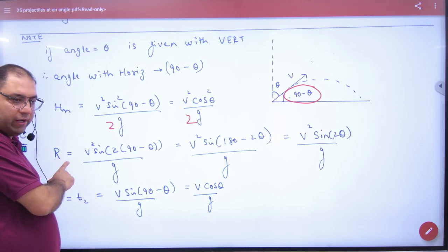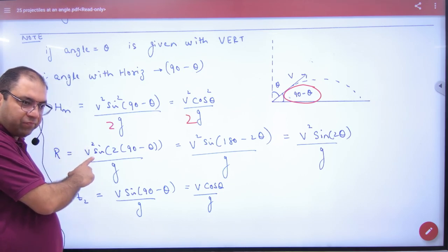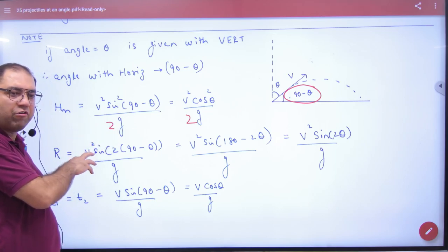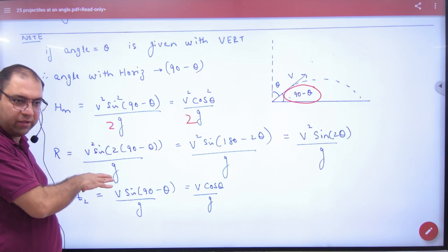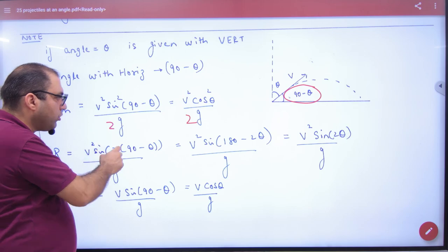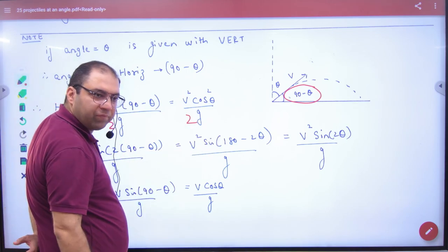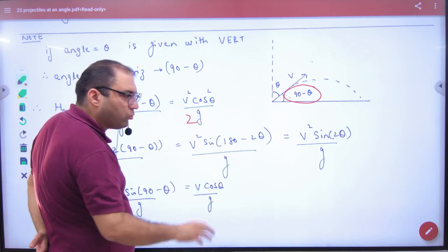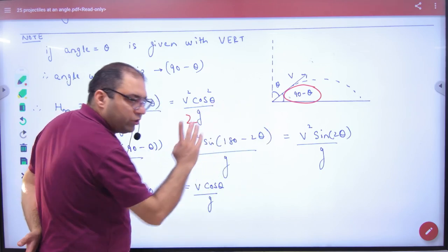Range formula: V square sine 2 into 90 minus theta by G. Why? Because range is the same formula, V square sine 2 theta by G. But theta, what will come here? 90 minus theta. 2 into 90 is 180, 2 theta. Sine of 180 minus 2 theta. So sin of 180 minus 2 theta, what will we write? Sin of 2 theta.